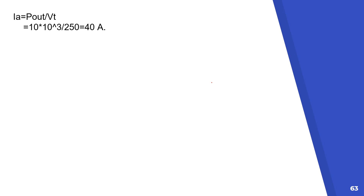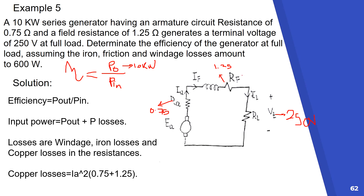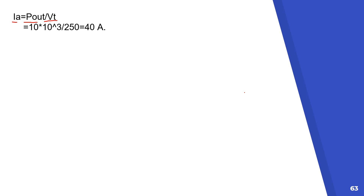So we need to find I_A. We can get I_A from the power output: I_A equals power output over V_terminal. The power output is 10 kilowatt and the terminal voltage is 250 volts, so the current is 10,000 over 250, which gives us 40 amperes.